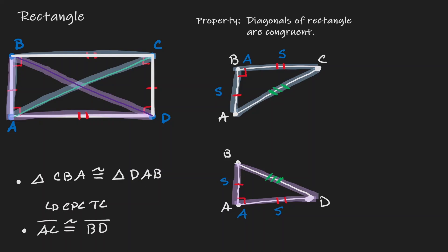And this is what we wanted to show, because these two line segments are the diagonals. So we have shown that diagonals in any rectangle are going to be congruent.